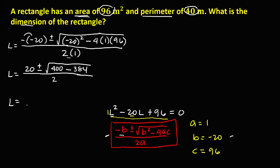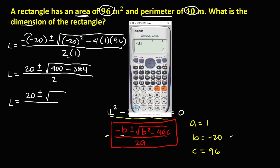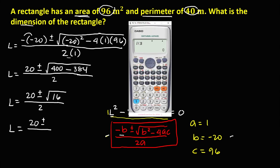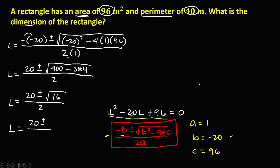So we have L equals 20 plus or minus the square root of 400 minus 384, all over 2. Computing 400 minus 384 equals 16. So L equals 20 plus or minus the square root of 16, over 2. The square root of 16 equals 4.